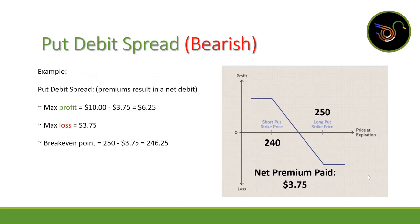For an example: if our short put strike price is $240, our long put strike price is $250 — a $10 wide spread — and the net premium paid to open the trade was $3.75, then our max profit is $10 minus $3.75, which equals $6.25. The max loss is the premium paid, which is $3.75. The breakeven point is the long put strike price minus the premium paid: $250 minus $3.75, which equals $246.25.